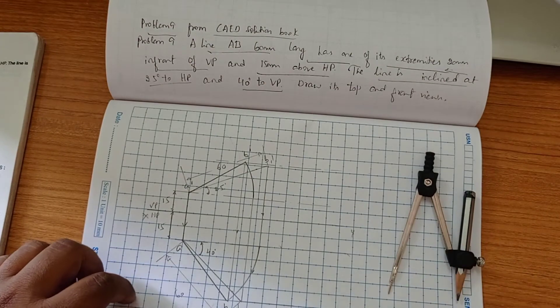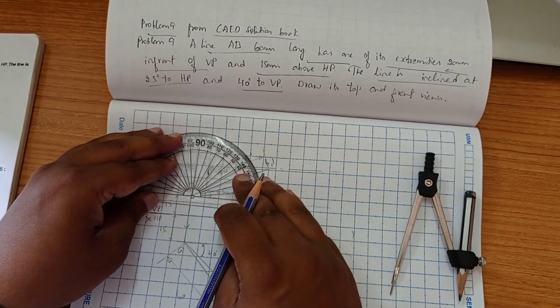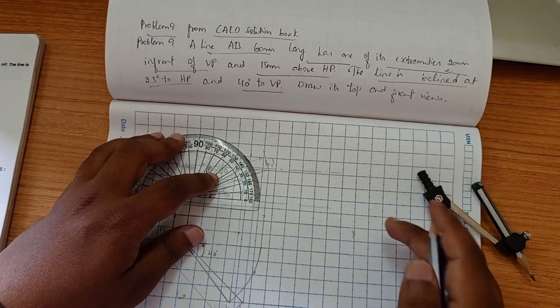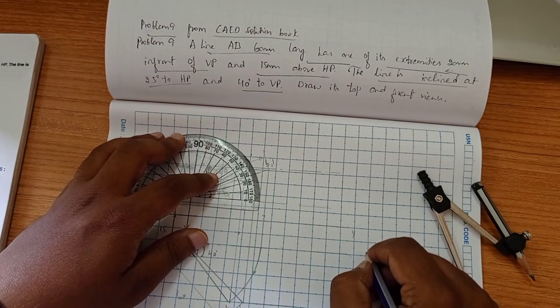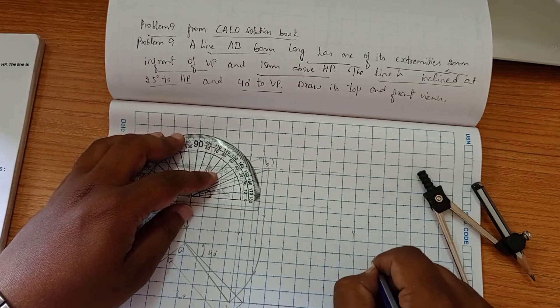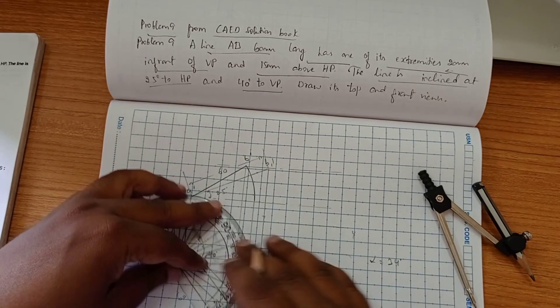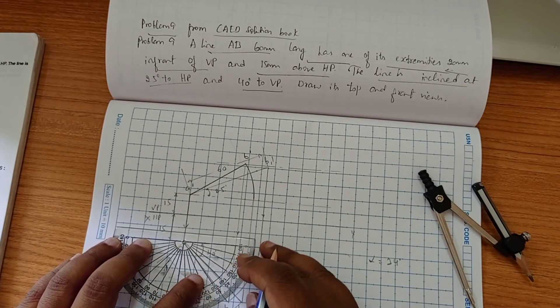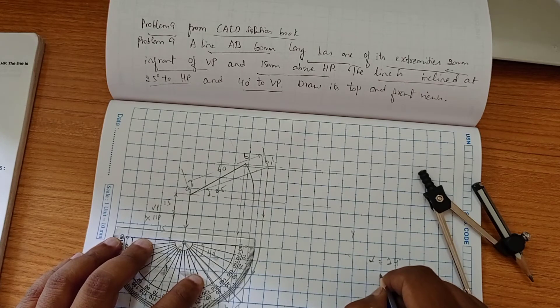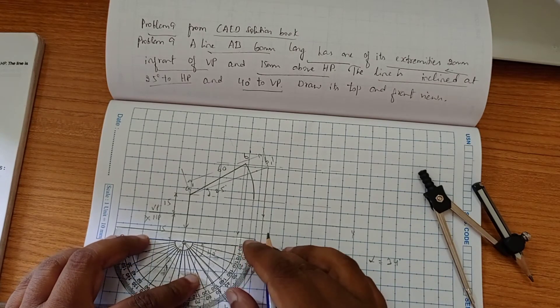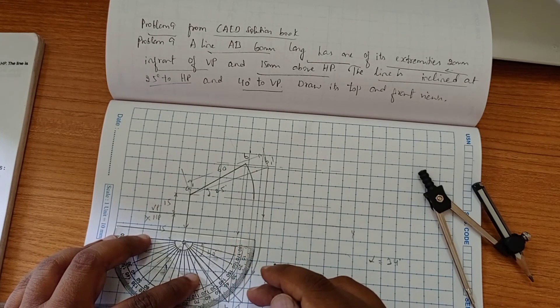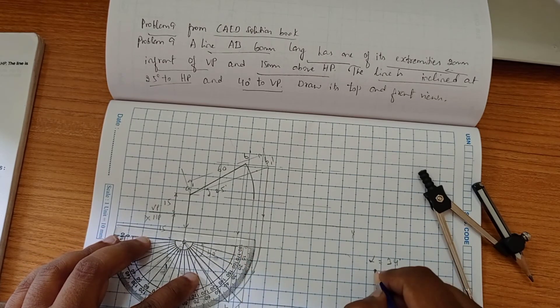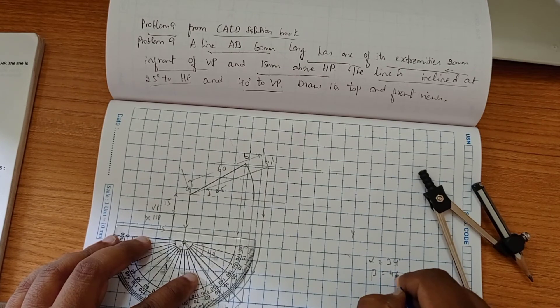Now we can find out the apparent angle inclinations here. The first angle alpha is 34 degree and beta angle we are getting around 46 degree.